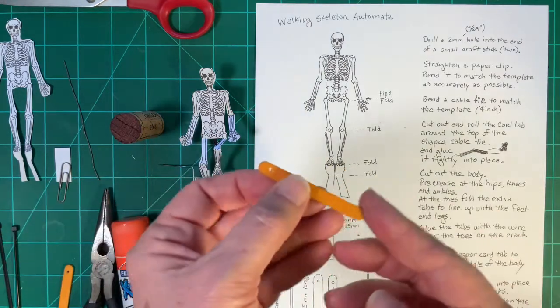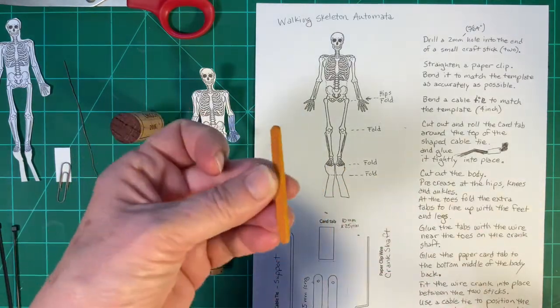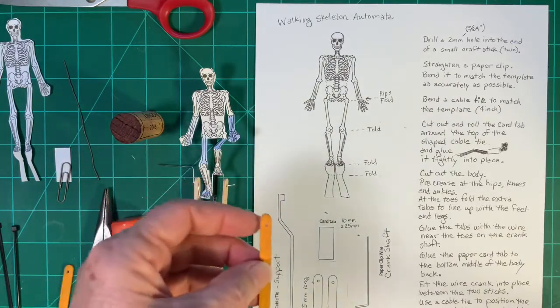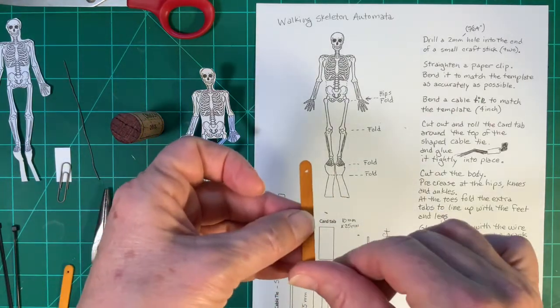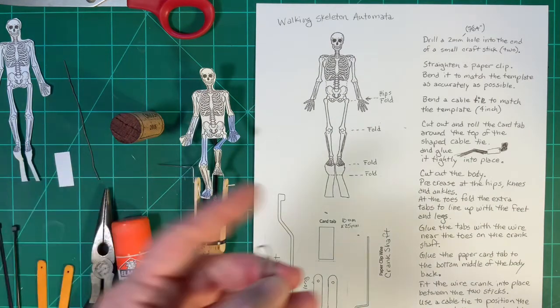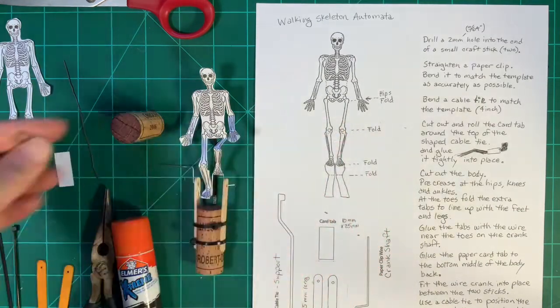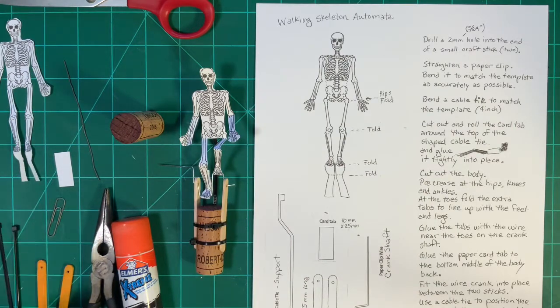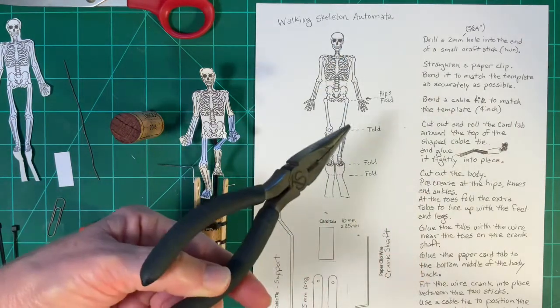They can be coffee stir sticks. These are just small craft sticks. They will be cut to 55 millimeters long. A small paper clip, pliers for bending the wire.